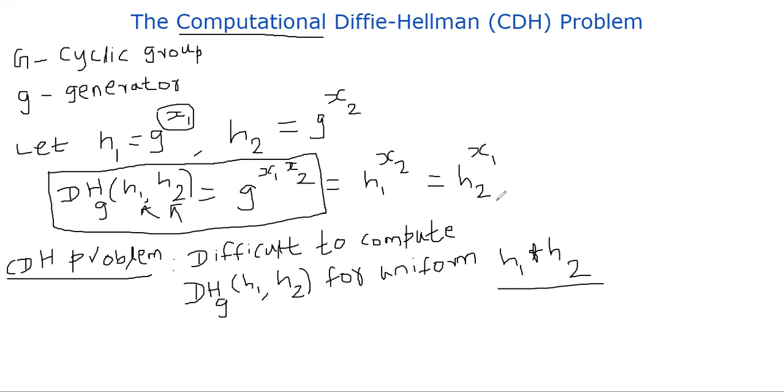So h2 and you already managed to find x1. So h2 power x1 is nothing but g power x1 x2. So you are able to solve the DH problem.